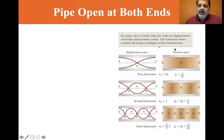So here we go. In a pipe open at both ends, the ends are displacement antinodes and pressure nodes. The harmonic series contains all integer multiples of the fundamental. At the end of both pipes open, the molecules are free to move, and so the displacement wave has antinodes. The pressure wave has nodes at the end but an antinode in the middle.